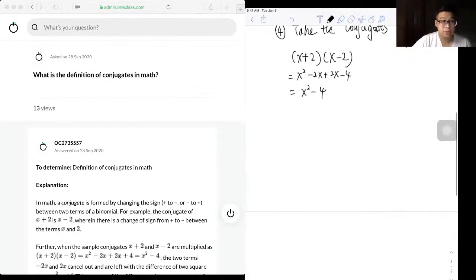And notice that the two terms, positive 2x and negative 2x, they cancel each other during the simplifying process. So x squared minus 4 actually is the only term that is left, and which is also the difference of two squares.